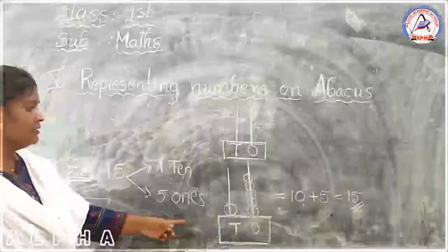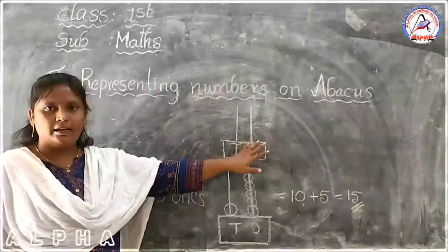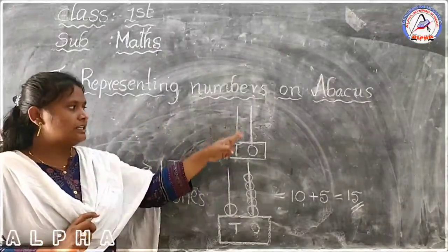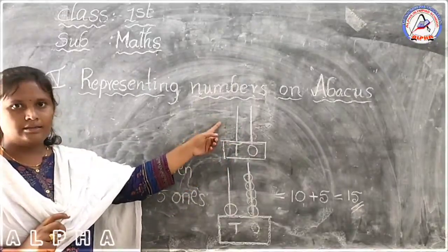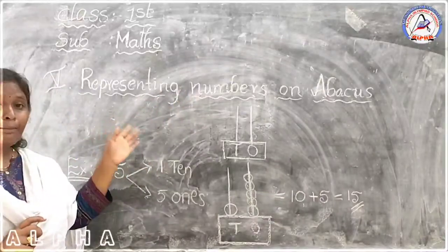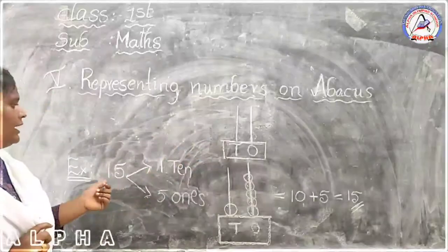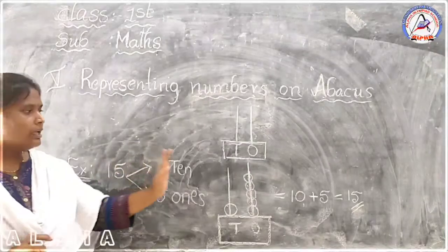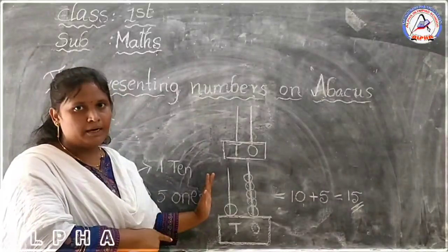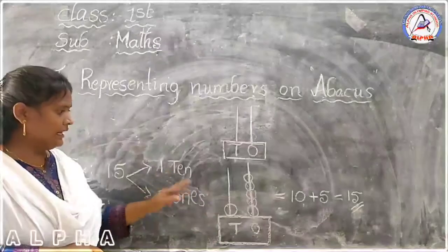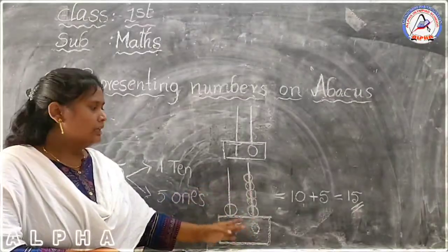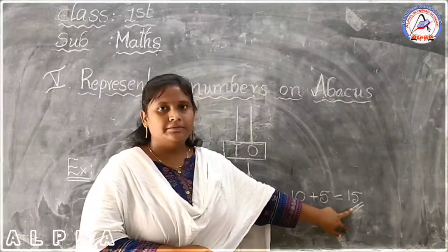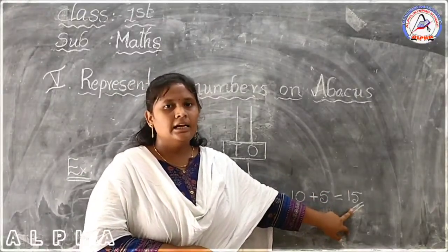Okay children, see again. Representing numbers on Abacus — Abacus is a tool for counting. In Abacus, you have two rods: the ones place rod and the tens place rod. Now we are going to represent numbers on this Abacus. The given number is fifteen. In fifteen, you have one ten and five ones. In the tens place we have taken one ten, and in the ones place we have taken five ones. That is fifteen.